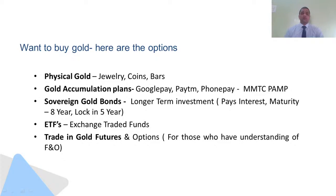If you do not want to buy jewelry because you do not have such heavy pockets, you can have gold accumulation plans, which is a digital platform provided by Google Pay, Paytm, and PhonePe in conjunction with MMTC-PAMP, which is one of the top refiners not only in India but also globally. The third option is in the form of sovereign gold bonds, which are for those who want to stay invested in gold for a longer period of time. The best part is that you get interest on your investment, the maturity stands at eight years, and the lock-in period is five years.